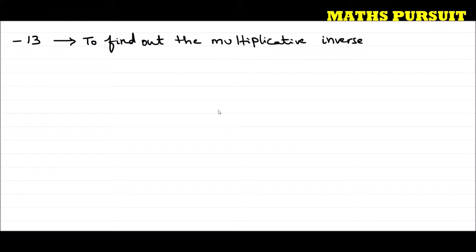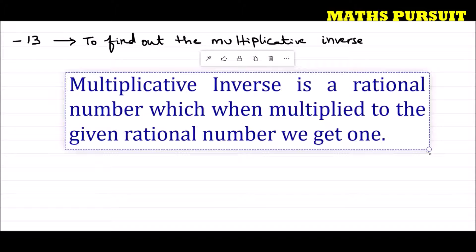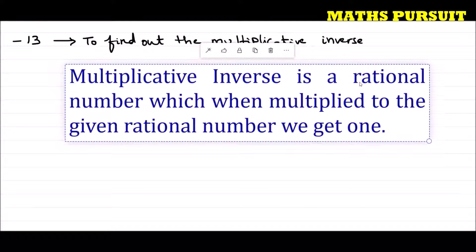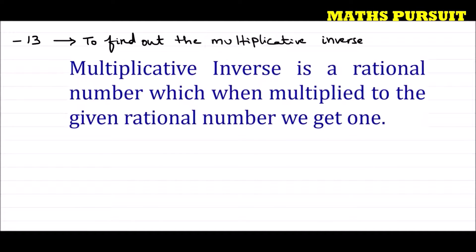Before starting, let us first of all try to understand what does it mean by multiplicative inverse. If you look here onto the screen, you will see that I have posted the definition of multiplicative inverse. Multiplicative inverse is a rational number which, when multiplied to the given rational number, we get 1. The definition is very simple and very straightforward.